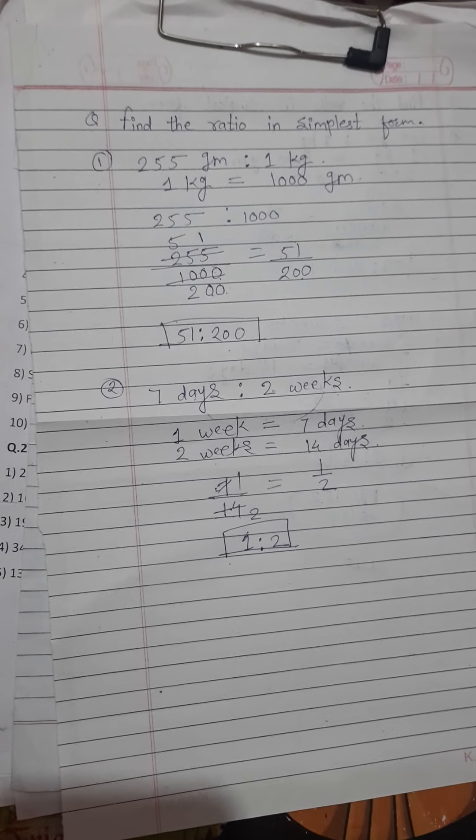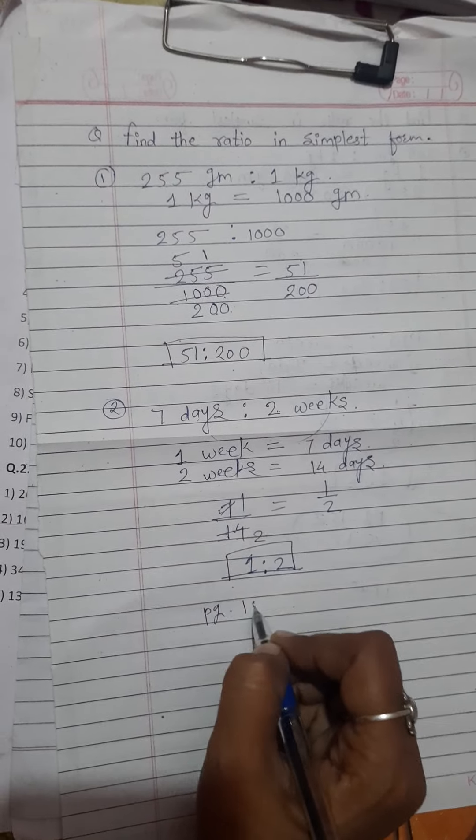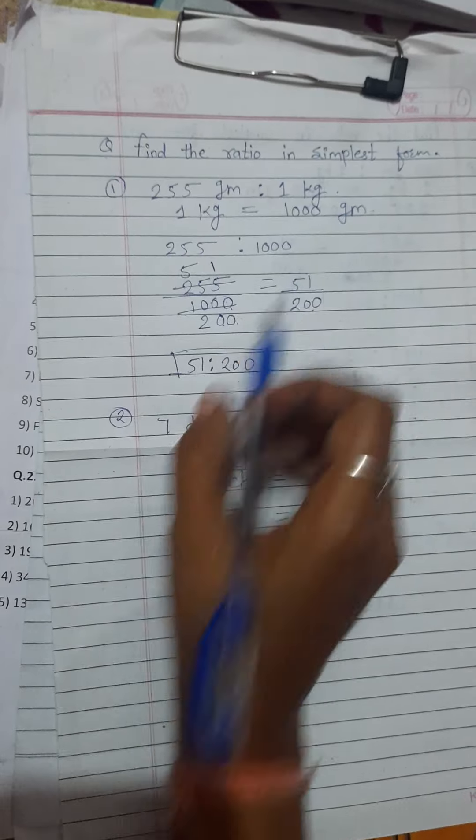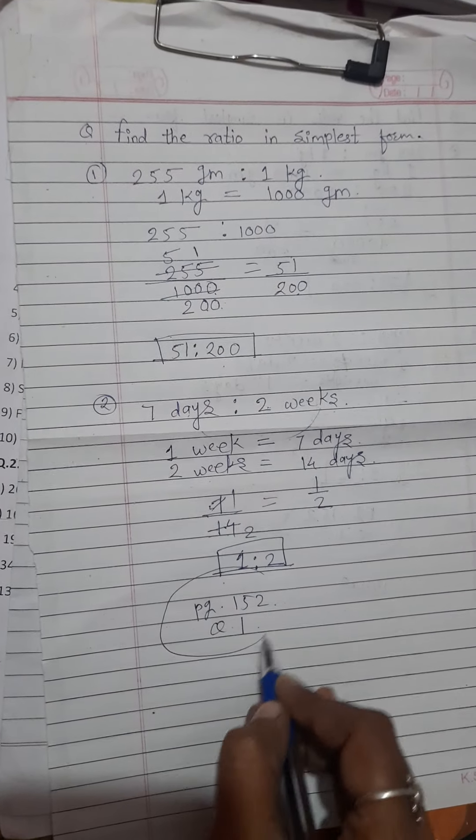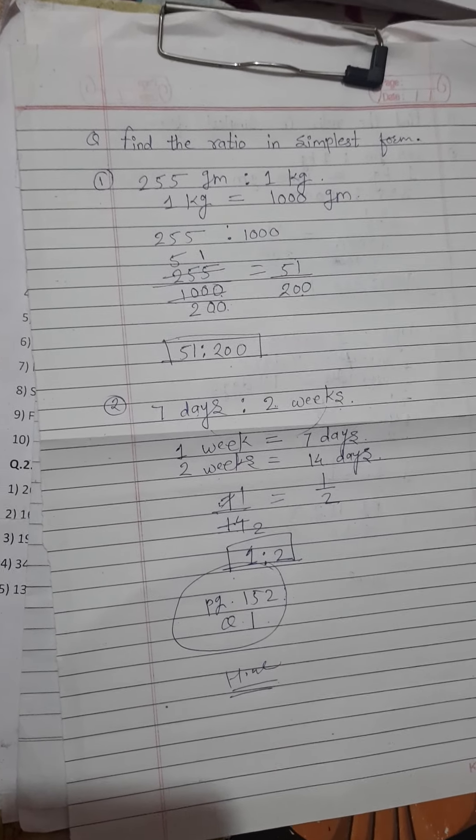It's very simple, children. So, in your page number 152 and question number 1, find the ratio in the simplest form. That is your homework. So, you have to solve that in your homework. Thank you.